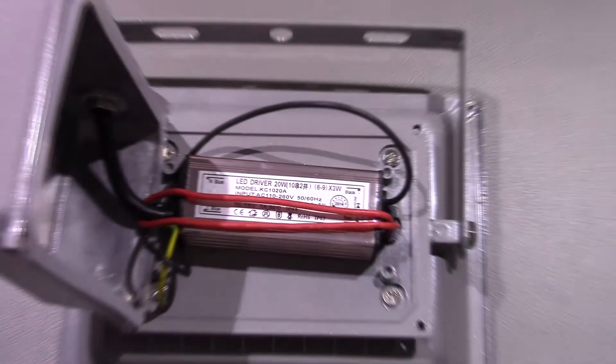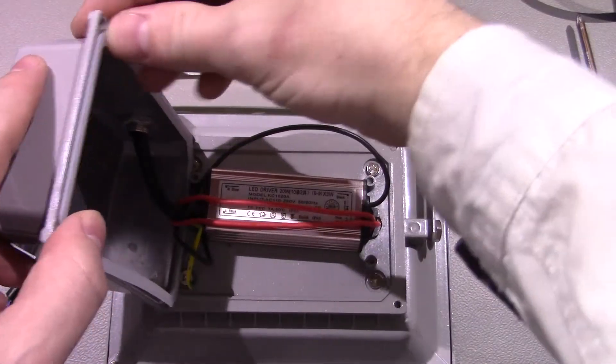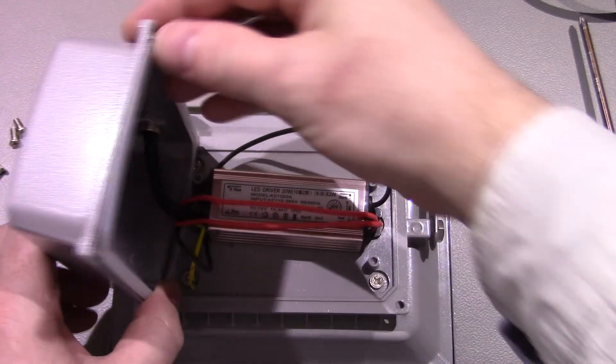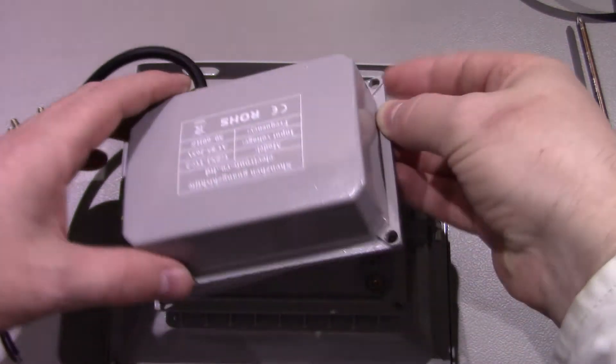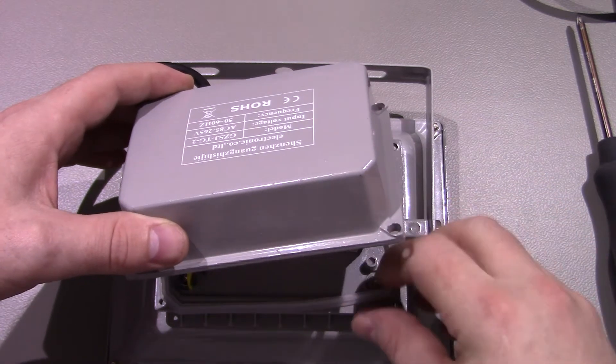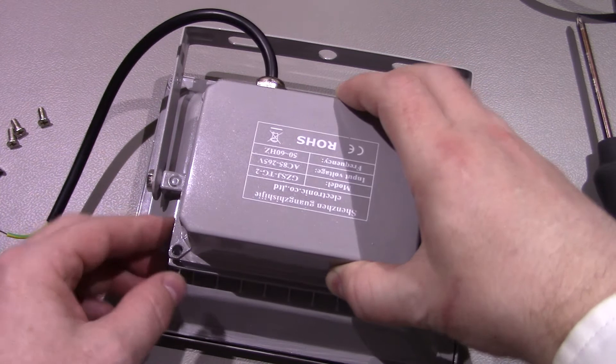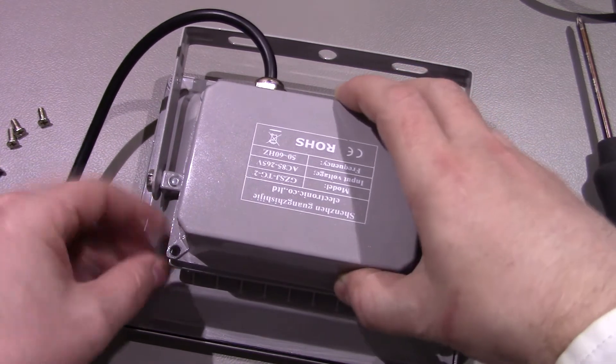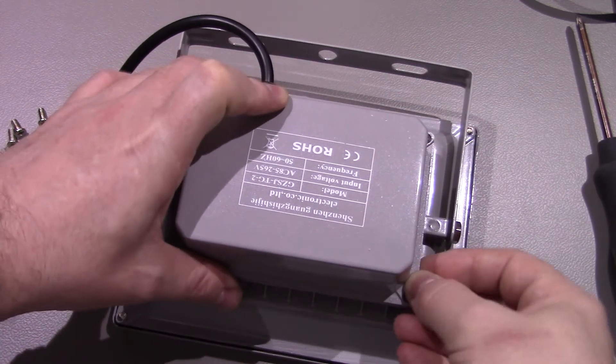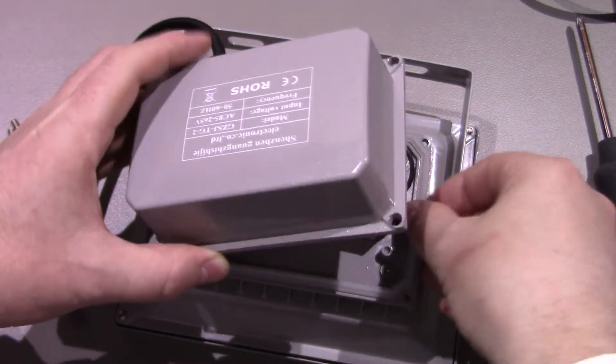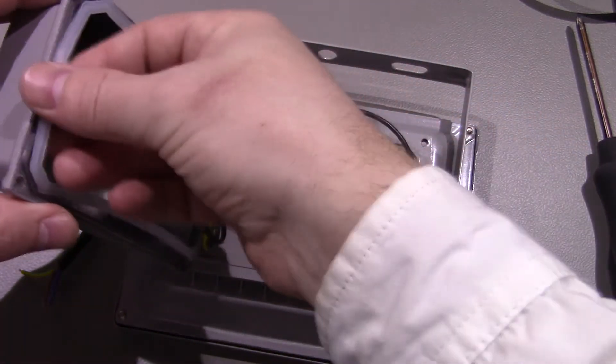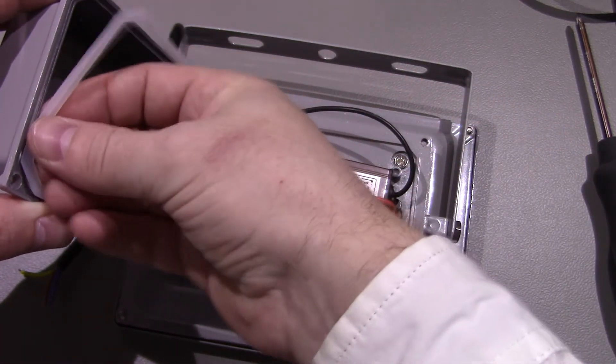See that? Rubber seal here. To keep it waterproof. Which isn't really a problem for me, because I'm not using them outdoors. Just beware if you do take one of these apart, to make sure you get the seal back on properly. Otherwise, of course, when you're outside, it's not going to be properly waterproof.